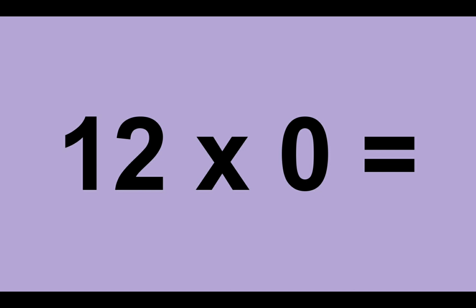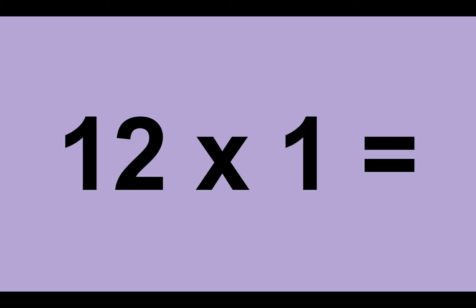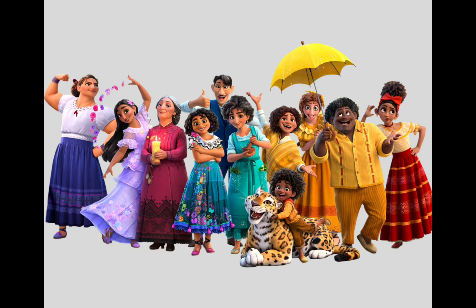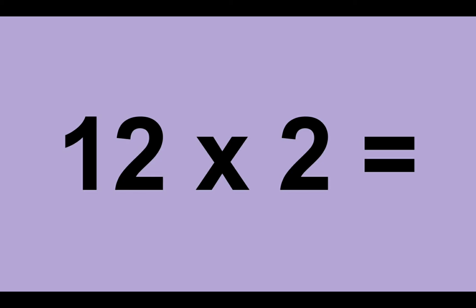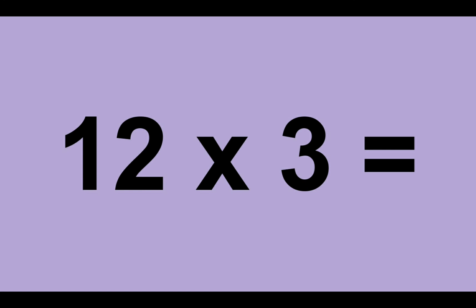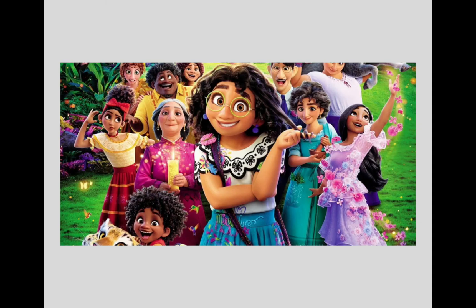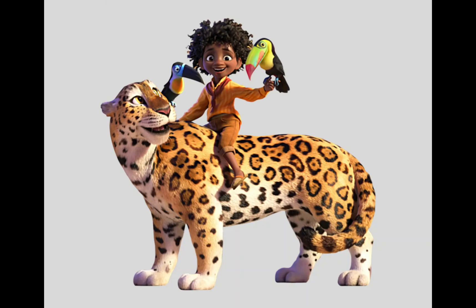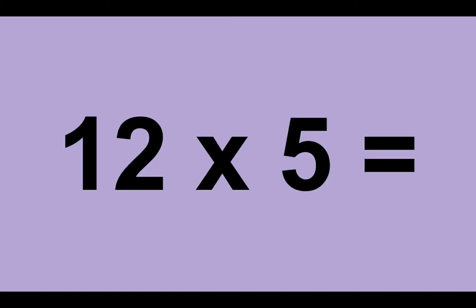12 times 0 equals 0. 12 times 1 equals 12. 12 times 2 equals 24. 12 times 3 equals 36. 12 times 4 equals 48. 12 times 5 equals 60.